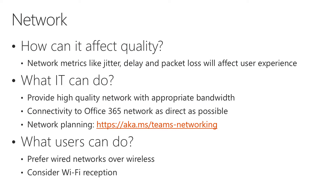Network is the third component that can affect quality. Network metrics like jitter, delay and packet loss will affect the user experience. We have a session on network planning at aka.ms/teams-networking where you can learn everything about these network impairments and how to address them. IT should provide a high quality network with appropriate bandwidth and ensure connectivity to Office 365 is as direct as possible. For end users, they should always prefer wired over wireless networks, and if they choose wireless, they should check that they have good wireless network reception.